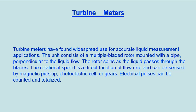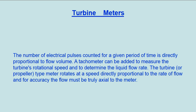The rotational speed is a direct function of flow rate and can be sensed by magnetic pickup, photoelectric cell, or gears. Electrical pulses can be counted and totalized. The number of electrical pulses counted for a given period of time is directly proportional to flow volume.